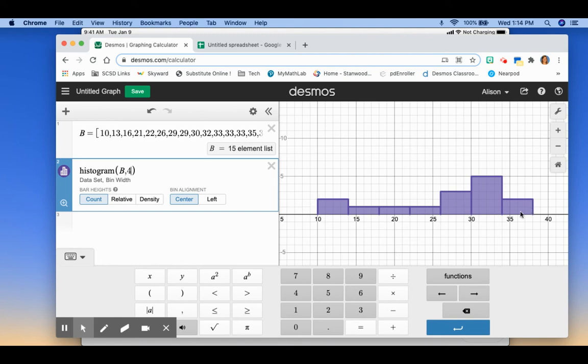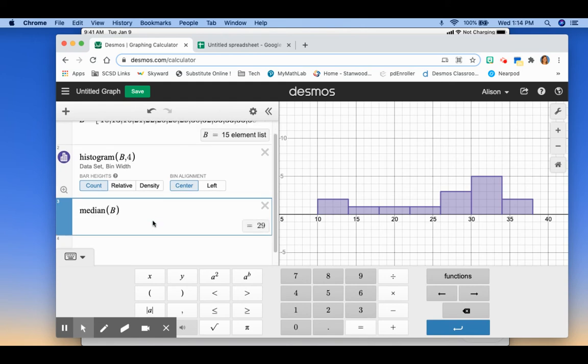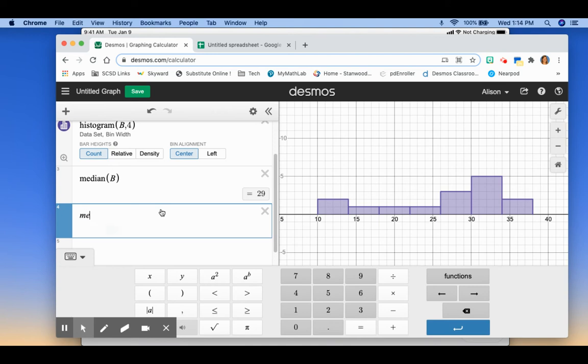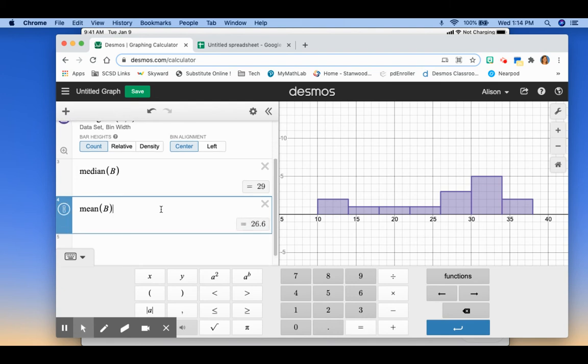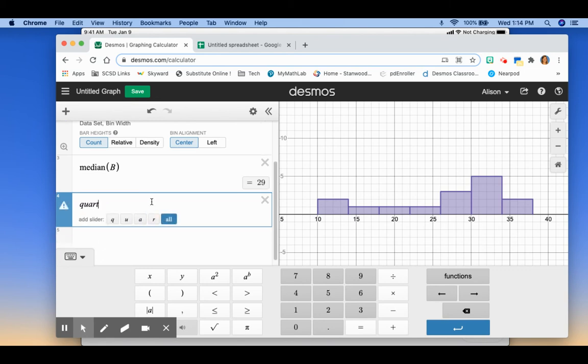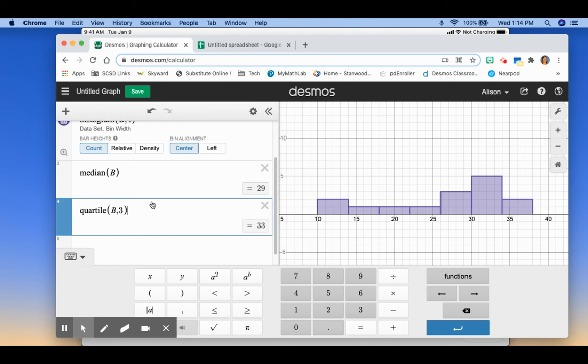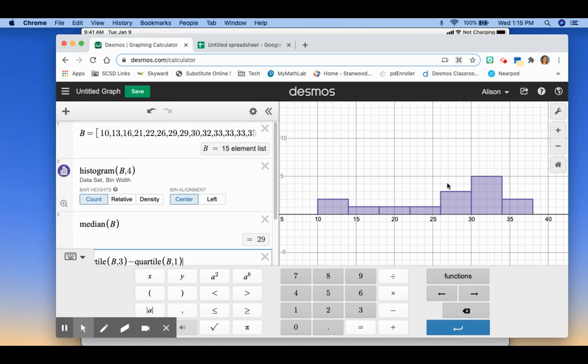So this gives us a better view. So you can see here that this would be skewed left because we have the tail over here. So you can see that it's not symmetric. So that would mean that we would want to use the median. So we could find the median of B. And we would expect that the mean is going to be lower than the median because of that tail to the left that's pulling it that direction. And sure enough, the mean is 26.6, where the median is 29. And then the IQR, you could say quartile of B3 minus quartile B1. And so our IQR is 12. So that's how you would use the histogram to determine what shape your graph is, so that way you know what measure of center and spread you should use to calculate.